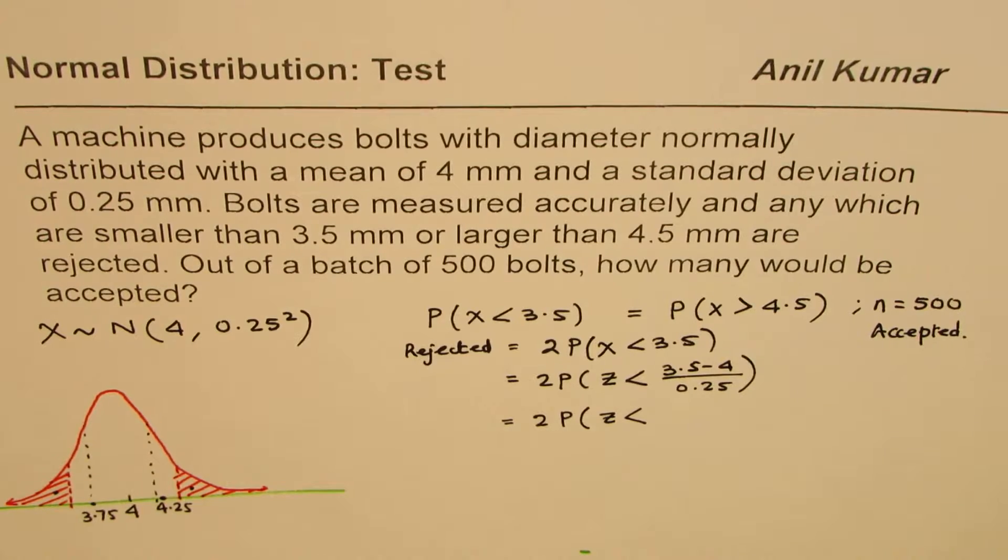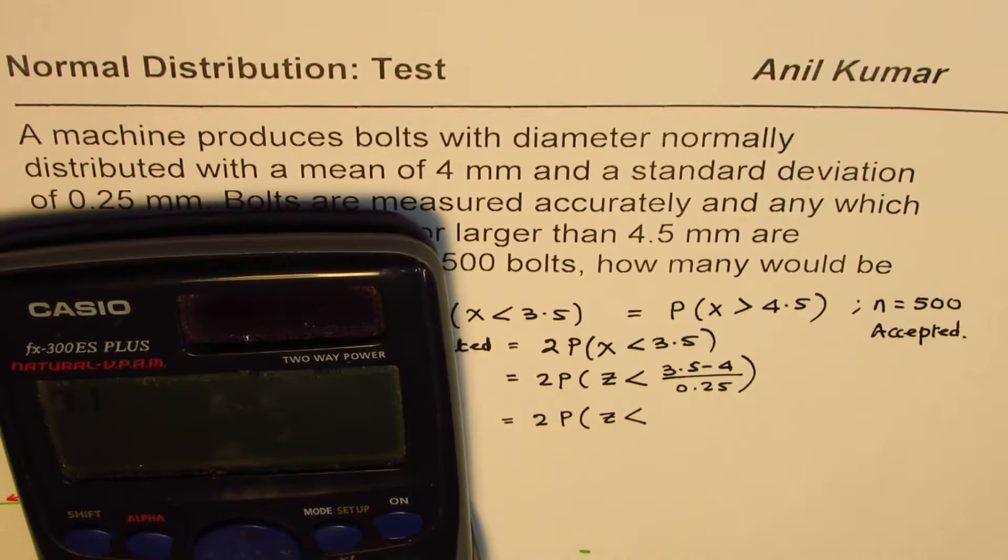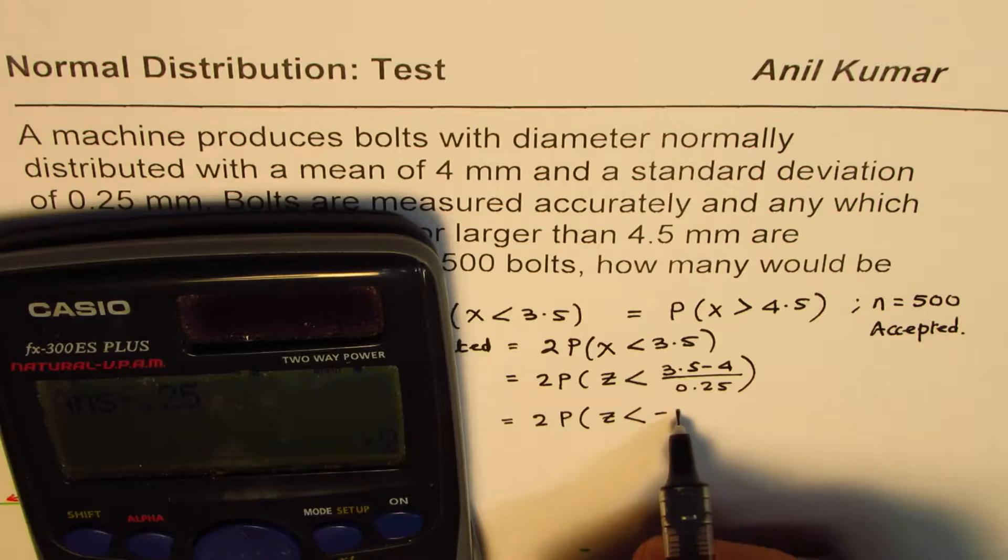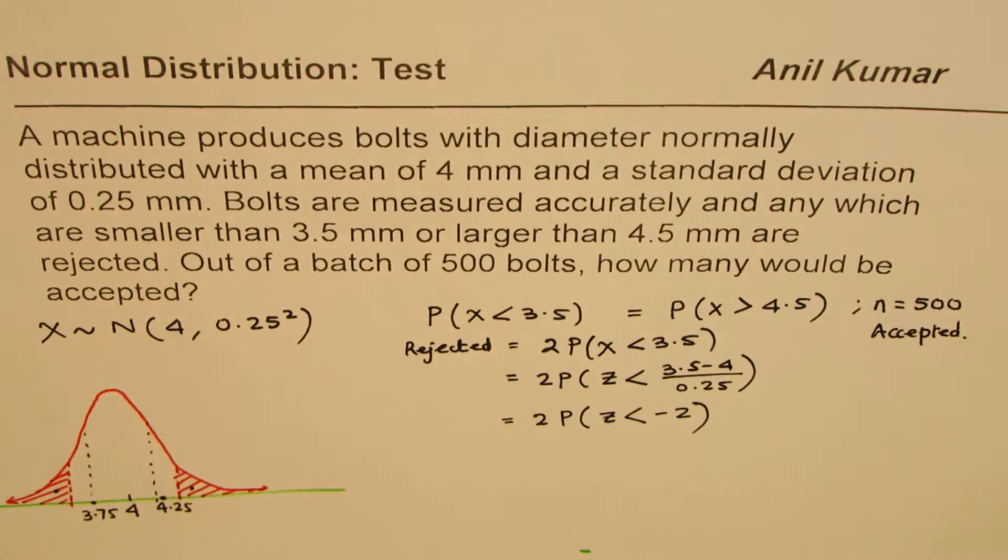So that gives you twice the probability with z which is less than, so if you calculate this, let's use a calculator. It is 3.5 minus 4 divided by 0.25 equals minus 2.